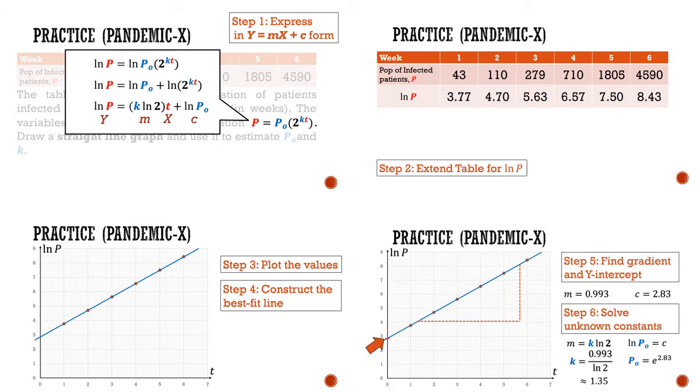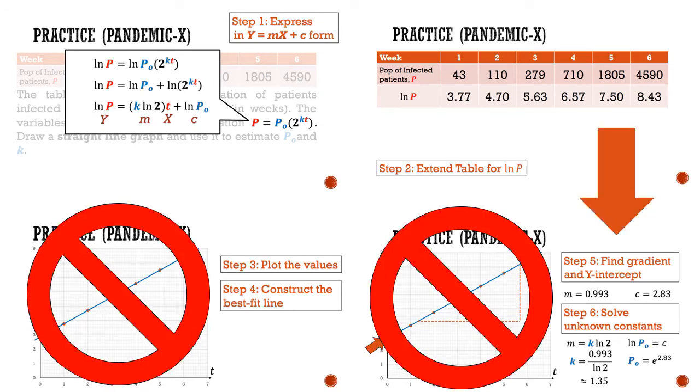Finally, with the gradient and the y-intercept, we are able to solve for unknown constants in the given model. In today's lesson, we will learn how to use the calculator to perform a shortcut to find the gradient and the y-intercept without actually drawing the graph. This is definitely not meant to be formal working, but it's a good way to check the accuracy of your answers for your Linear Law questions.